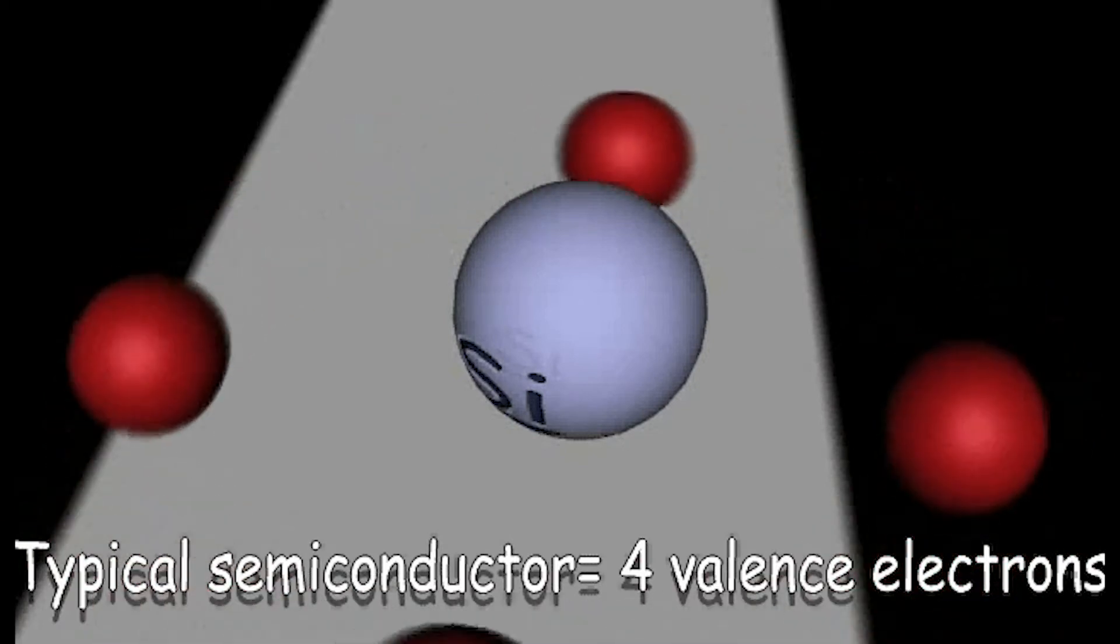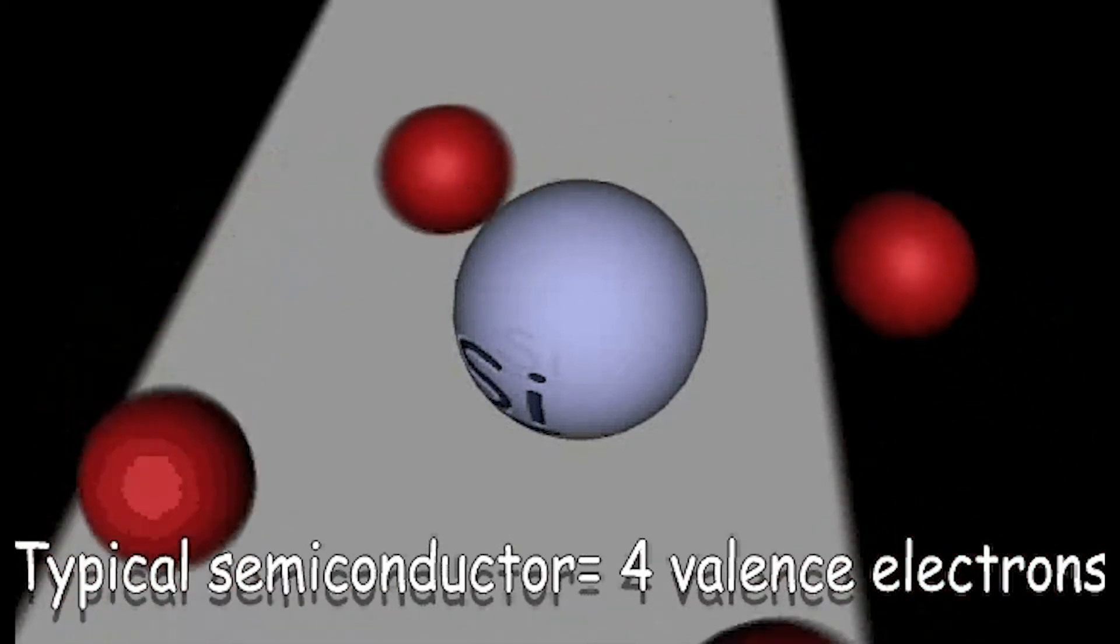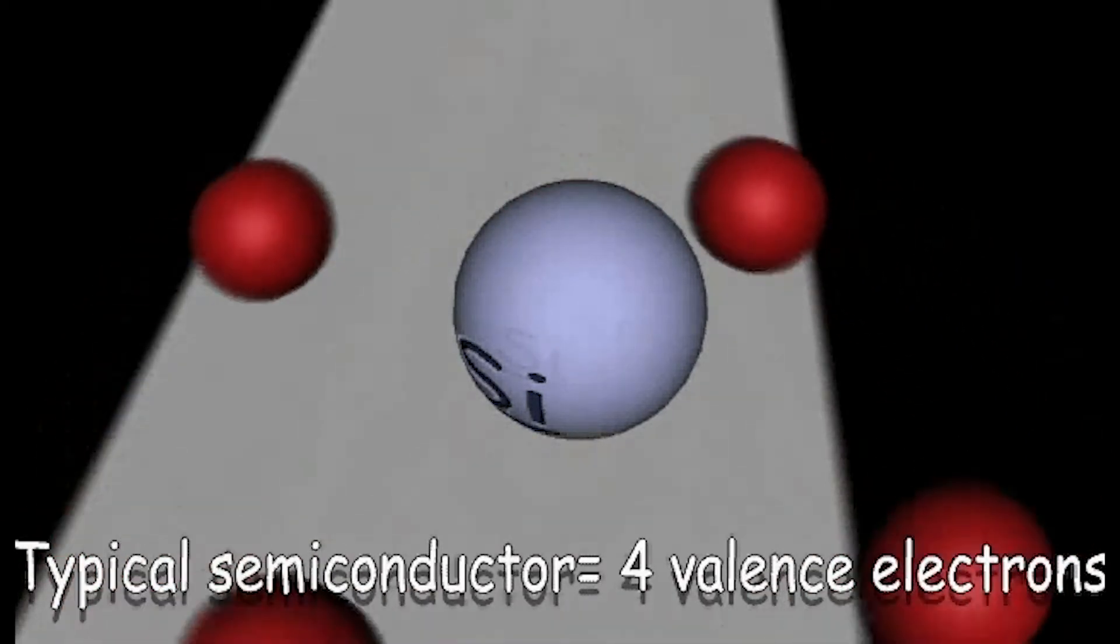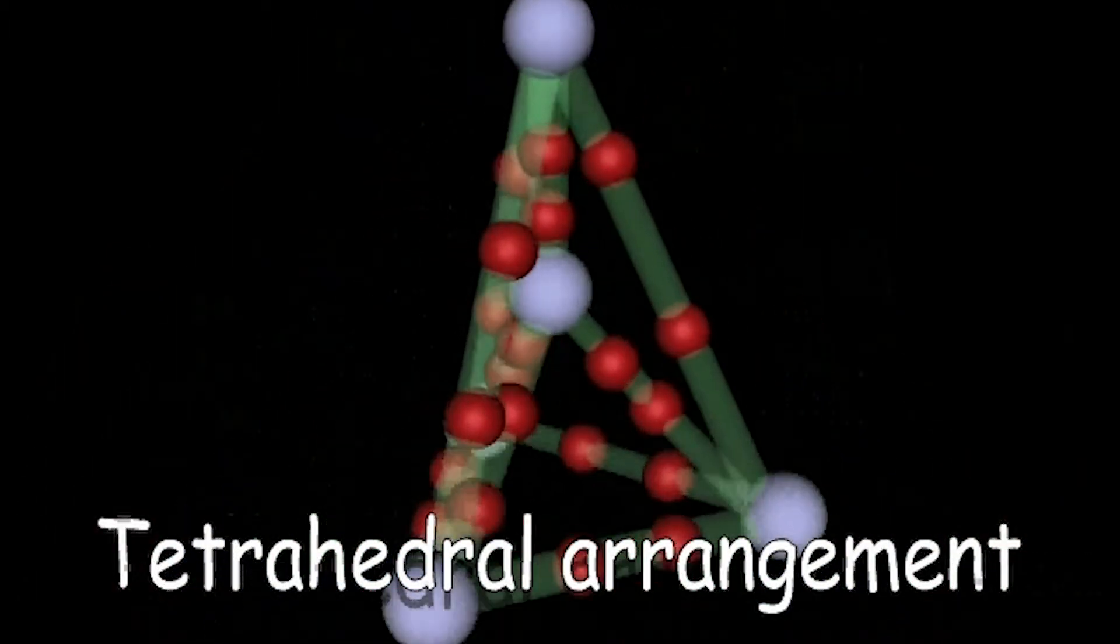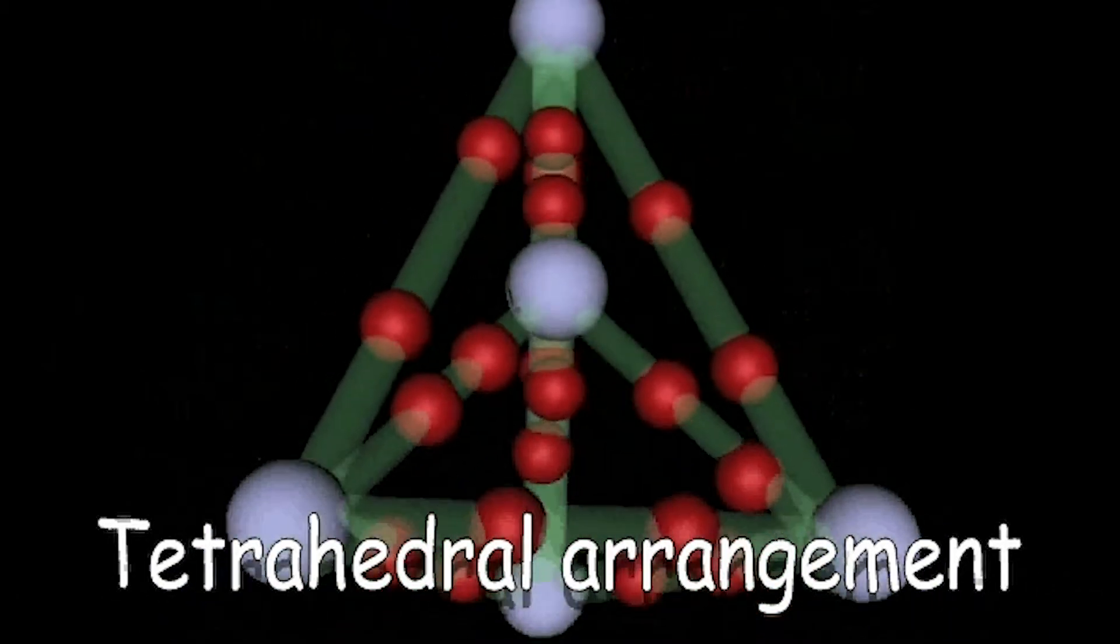Because eight electrons is a stable number, one more or one less electron will change the charge of the atom. In a tetrahedral arrangement, each atom forms covalent bonds with four surrounding atoms.